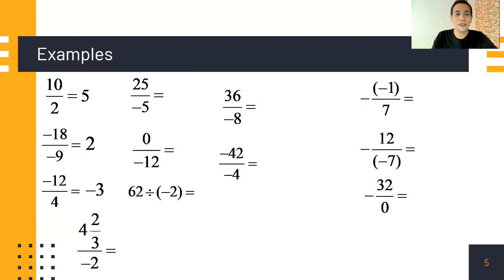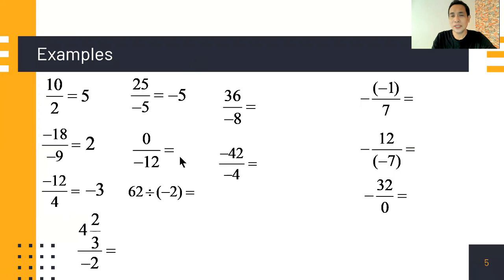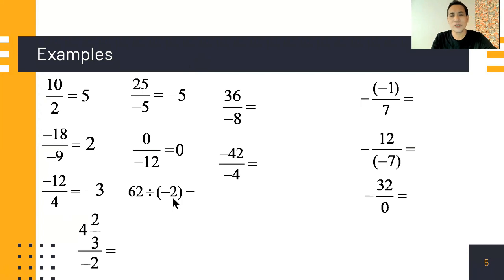Positive 25 divided by negative 5 — different signs, so the quotient is negative 5. Next: zero divided by negative 12 — zero divided by any number equals zero. Next: 62 divided by negative 2 — different signs, so the quotient is negative 31.